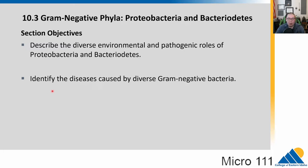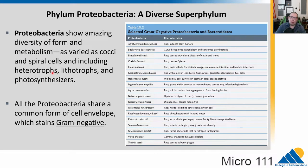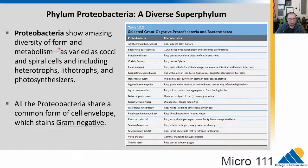We'll talk about a couple of specific diseases caused by gram-negative bacteria. The proteobacteria is a super diverse group, and scientists are thinking about maybe splitting it up — there's so much stuff in there. We have basically every form of metabolism in there: cocci, spiral-shaped cells, rods, heterotrophs, lithotrophs, photosynthesizers. Pretty much everything is in there.